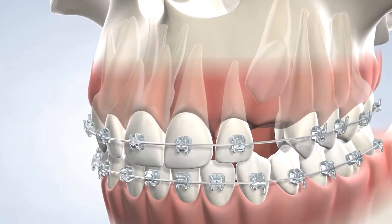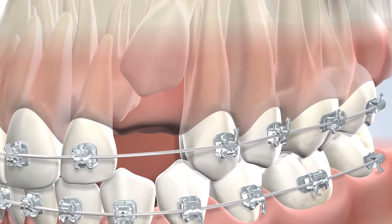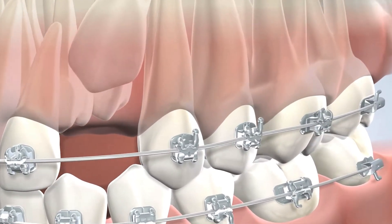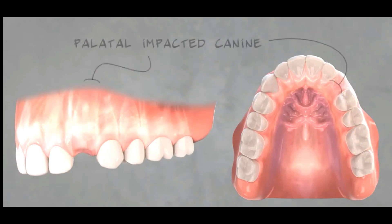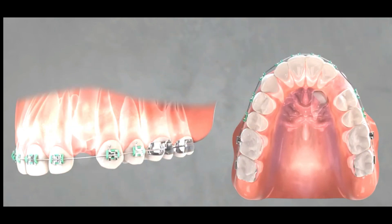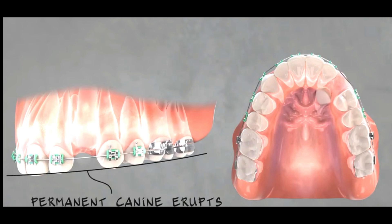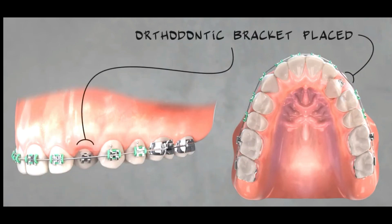There are various reasons for impacted teeth. One reason could be a delay in shedding of deciduous teeth. In such cases, the primary tooth is extracted and spontaneous eruption of the permanent tooth takes place, and a bracket is placed to bring it into the arch.